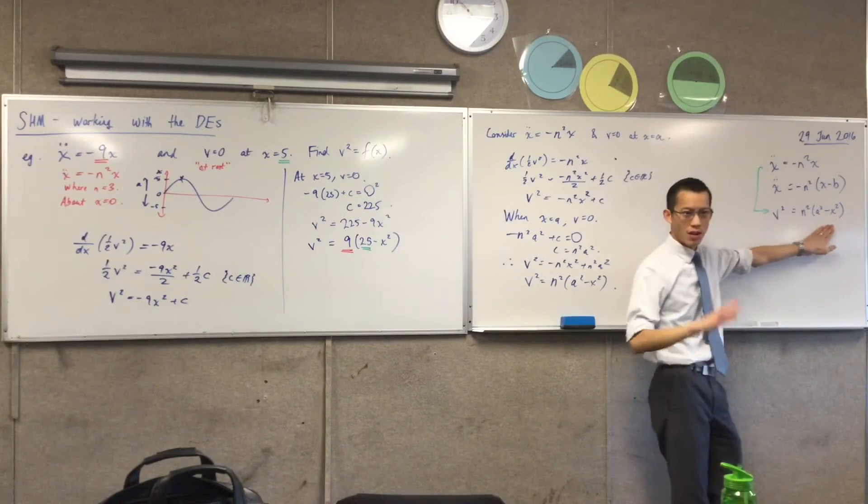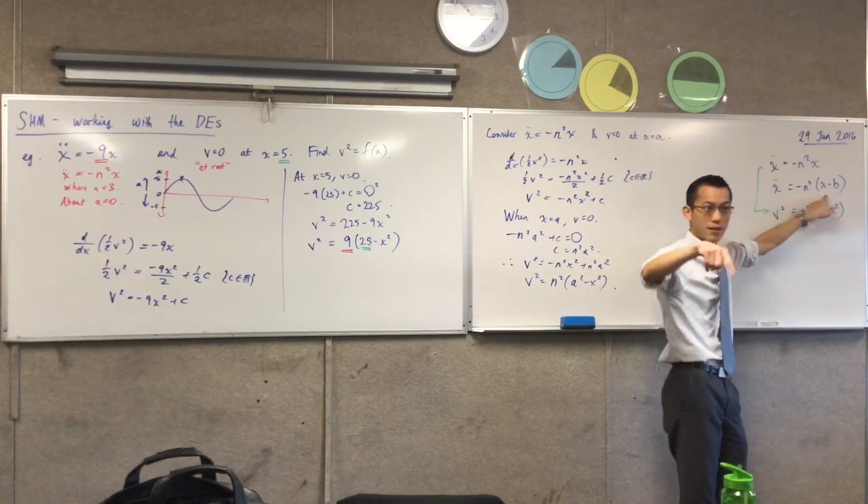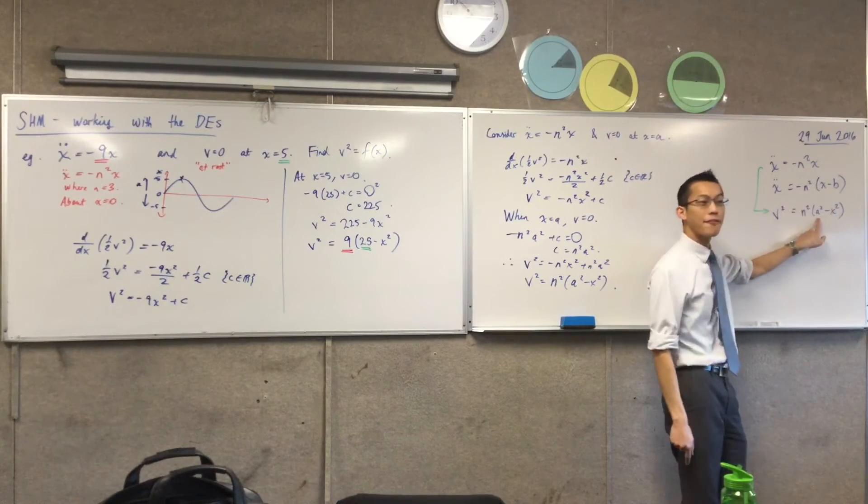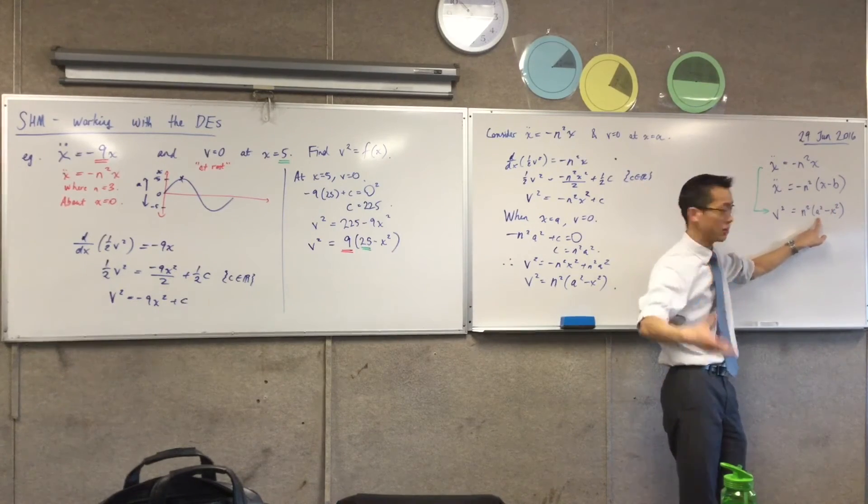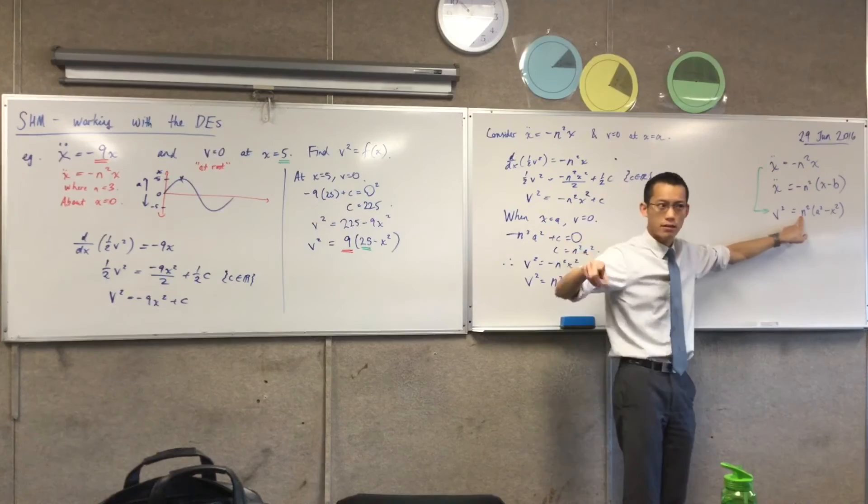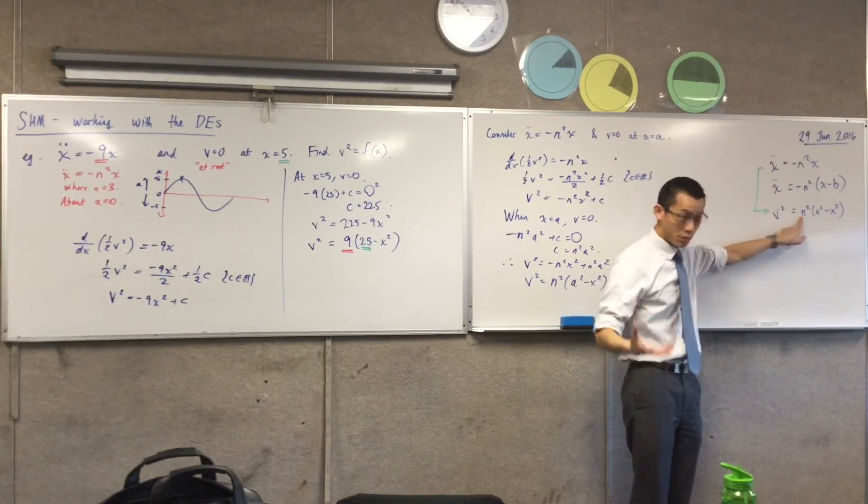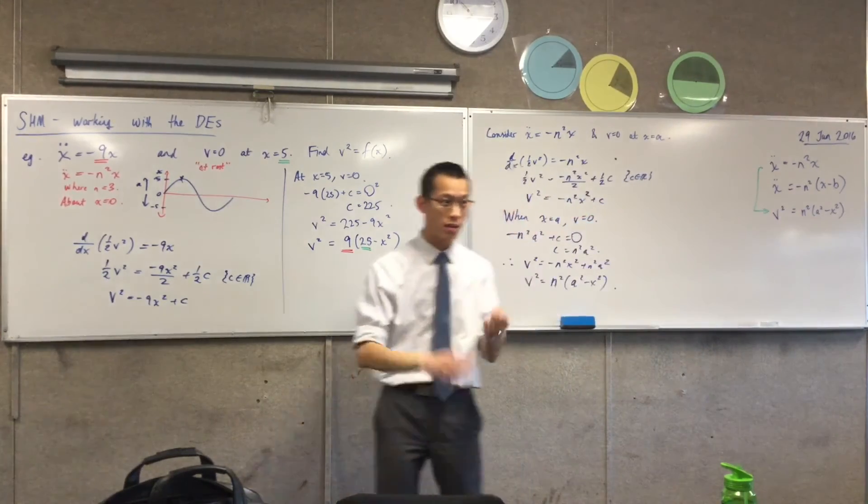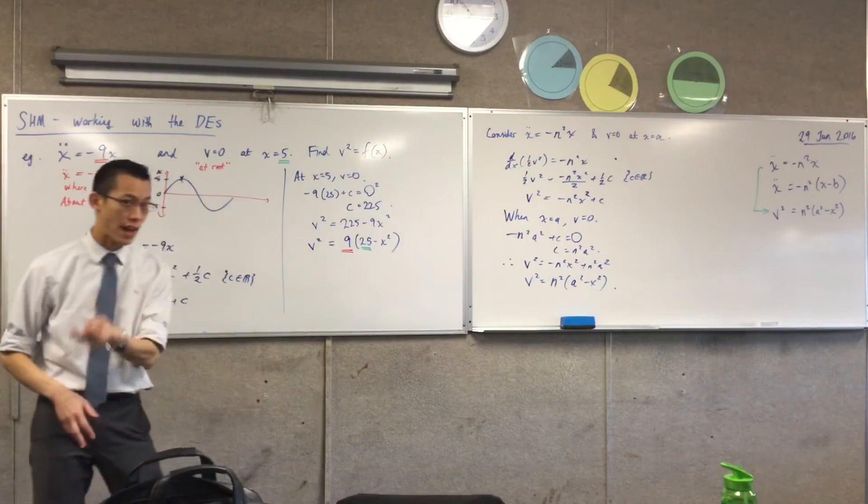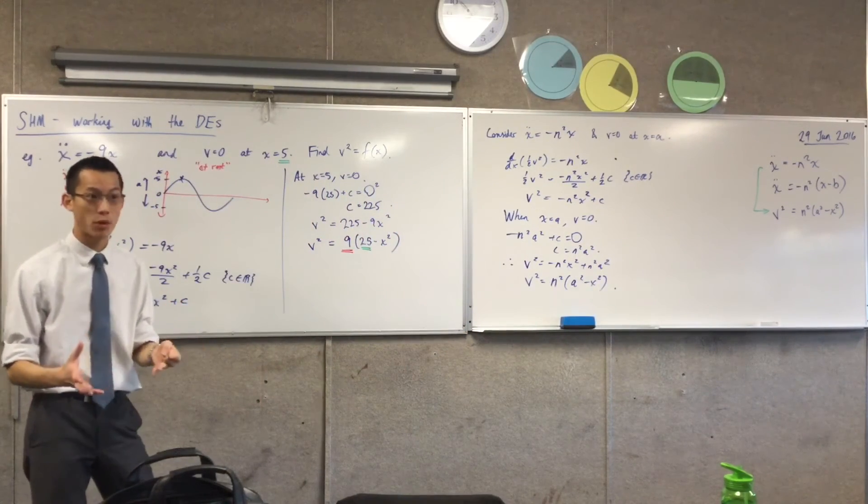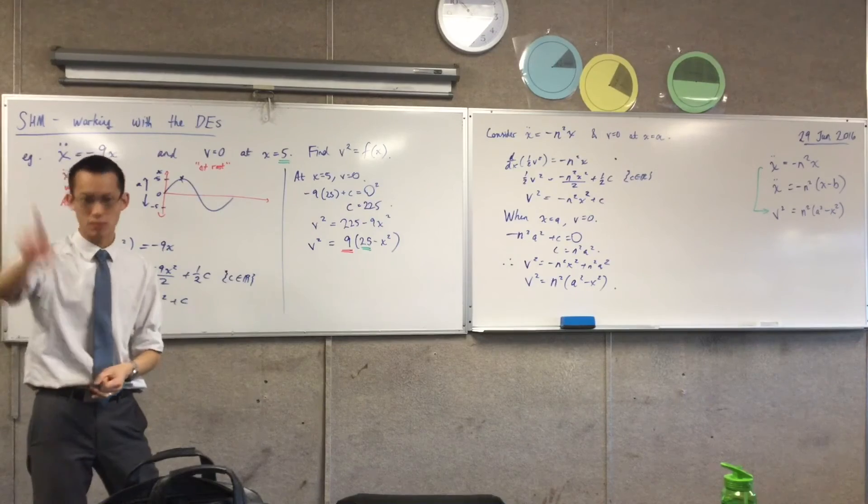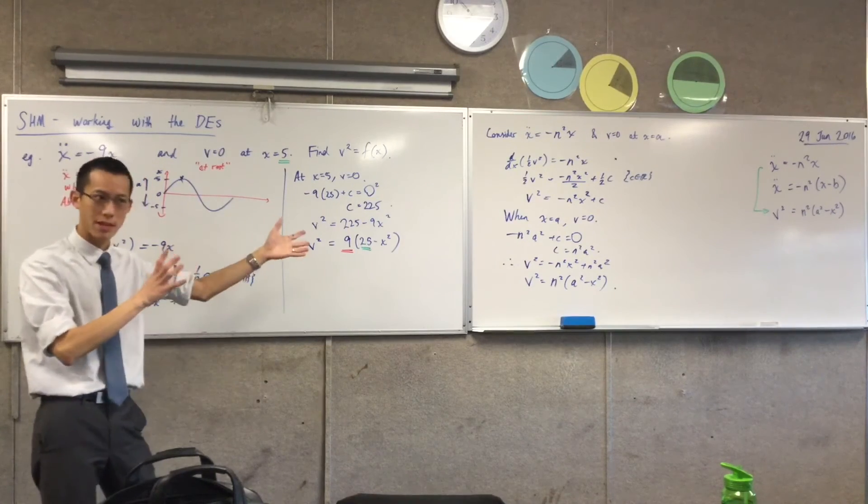But what this tells you is not about like where is your center of motion. It tells you how far you move from your center of motion as well as how quickly you do that. Does that make sense? So if you get something like this, you can straightaway read off period, amplitude. You can't read off starting point, but that's okay. Often that's not that important. You don't care where you begin, you're going to do the same thing anyway forever. Does that make sense?